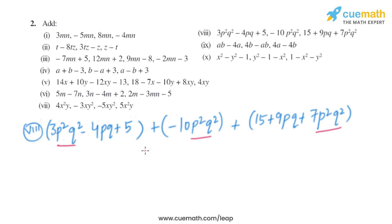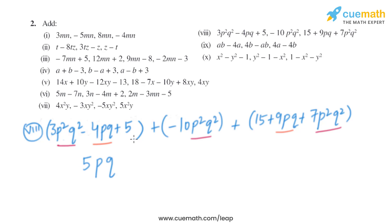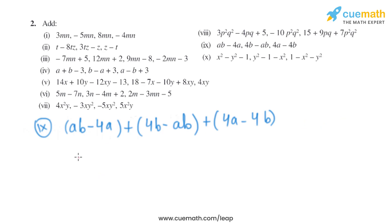Minus 7p²q² plus 7p²q² gives us 0. For the pq terms: minus 4pq plus 9pq gives us plus 5pq. For the constants: 5 plus 15 gives us 20. So the result for part 8 is 5pq plus 20.